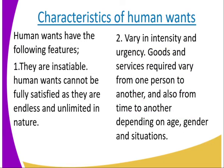Then we look at the characteristics of human wants. One of the characteristics of human wants is that they are insatiable. Human wants cannot be fully satisfied — they are endless and unlimited in nature. For example, if you are striving to get a car and you get that car, the next thing you will start wanting something else. So they are unlimited.